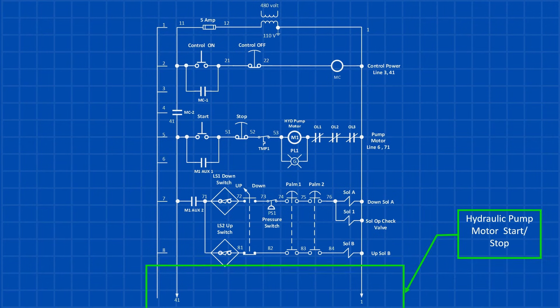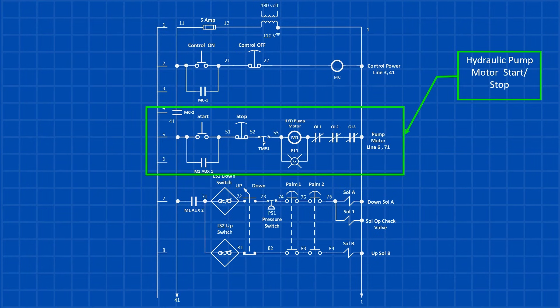The next rung in the ladder diagram controls the hydraulic pump motor starter. Like the master control circuit, it's a latching circuit but includes additional interlocks, a hydraulic temperature switch, and a motor overload protection contacts. When the start push button is pressed, the motor begins running.